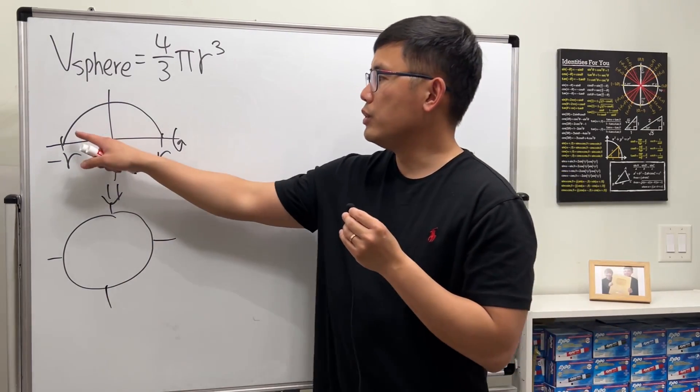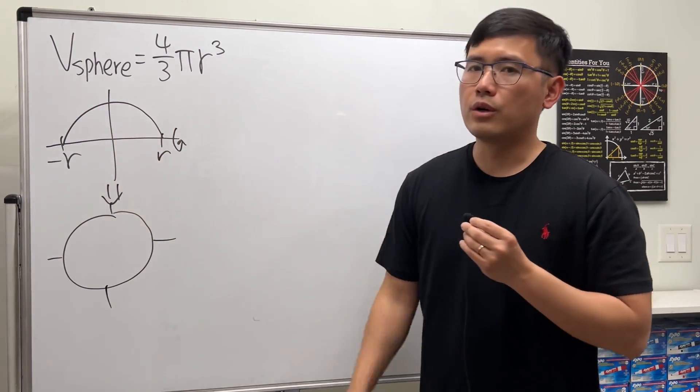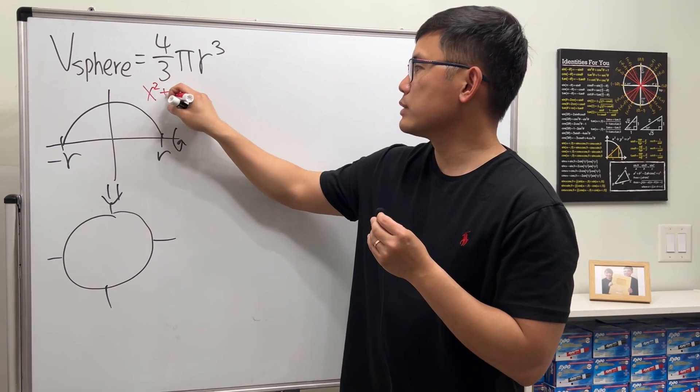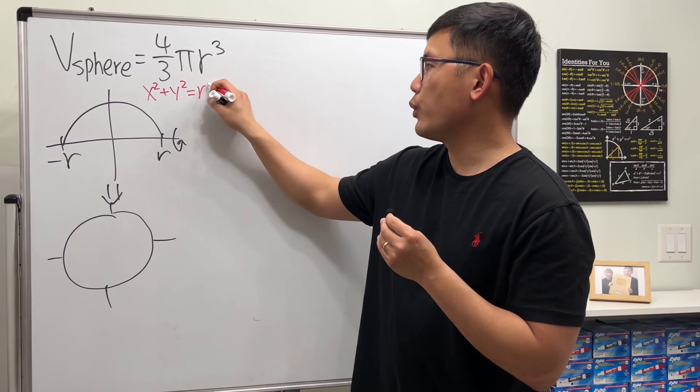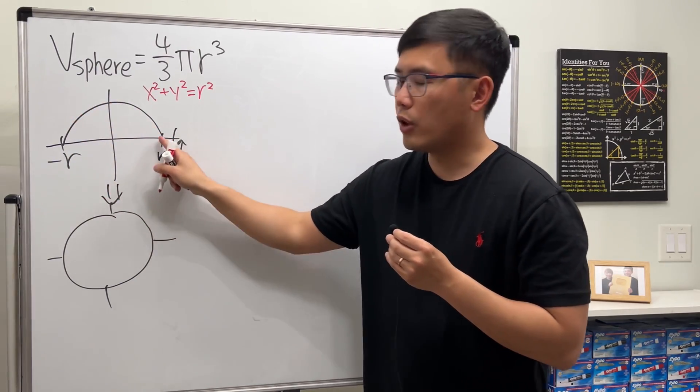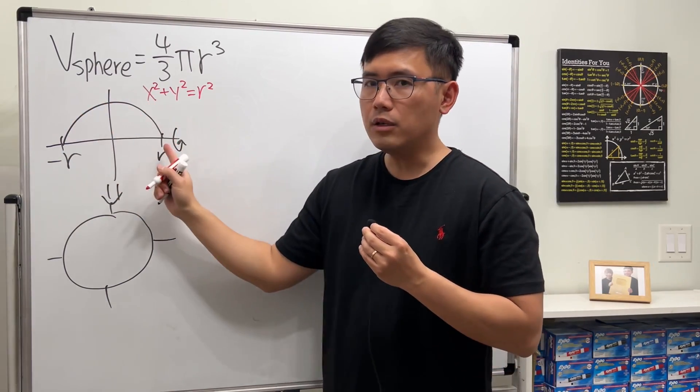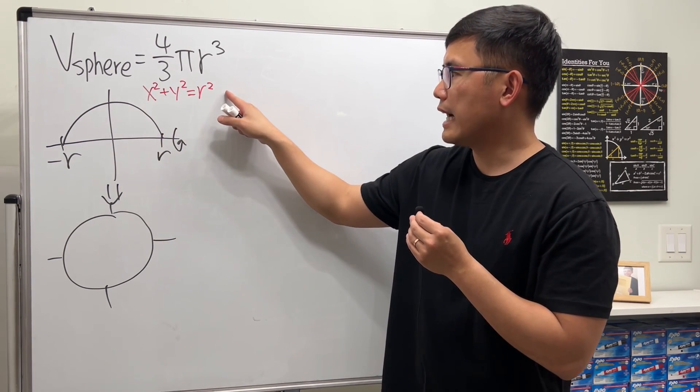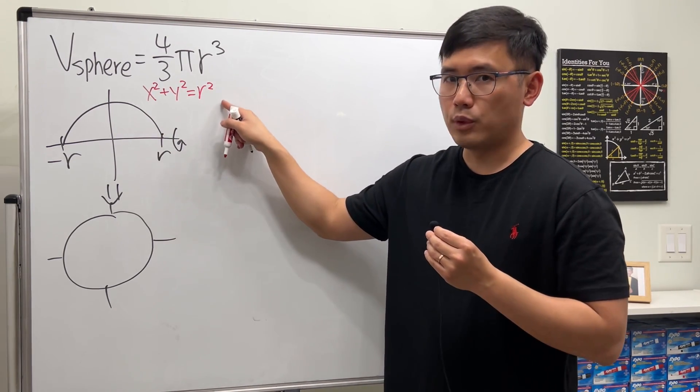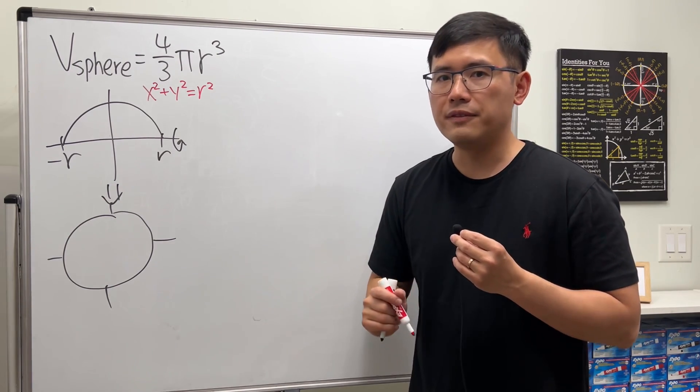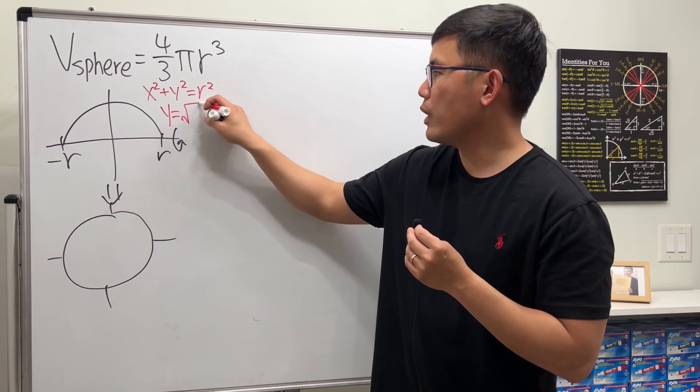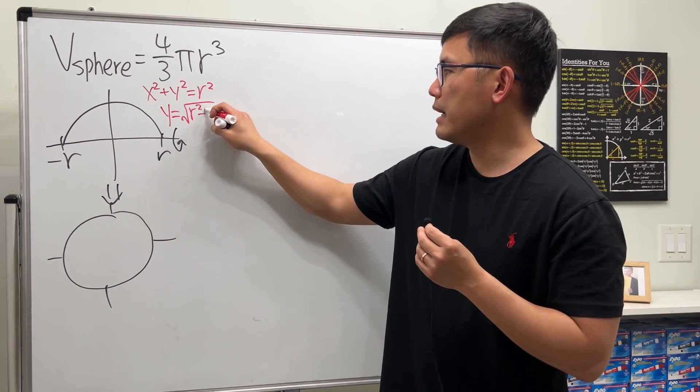Now, we will need to know the equation of this semicircle. We know that x² + y² = r² gives us the whole circle. So, let me bring the x² to the other side, and then take the square root on both sides, and just take the positive version. So we get y = √(r² - x²).